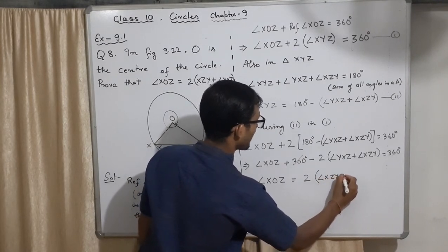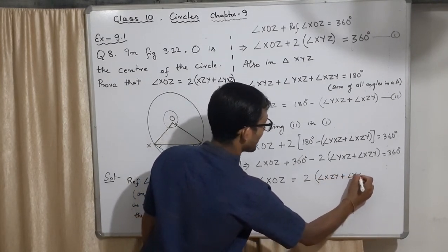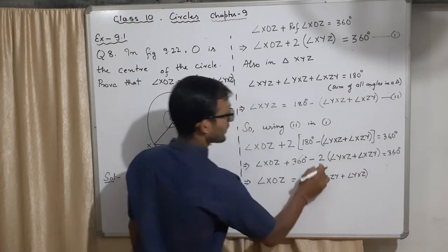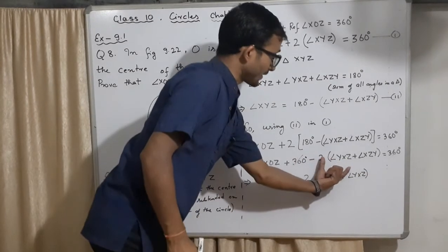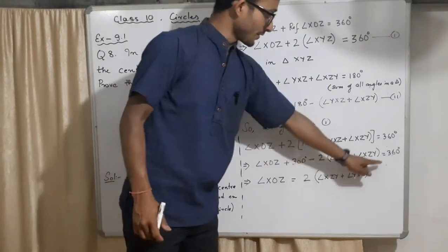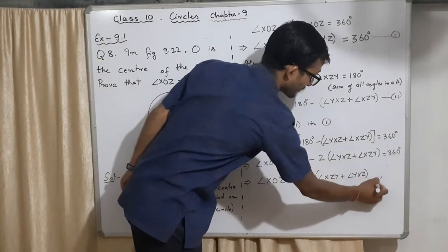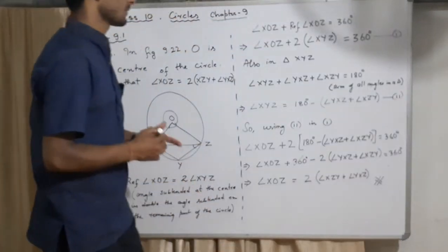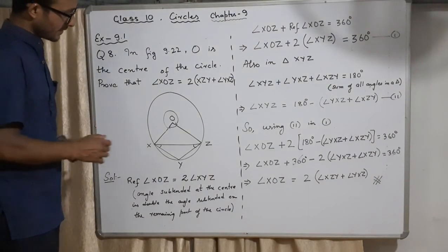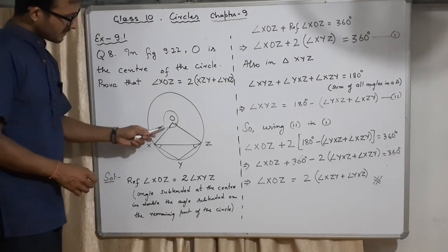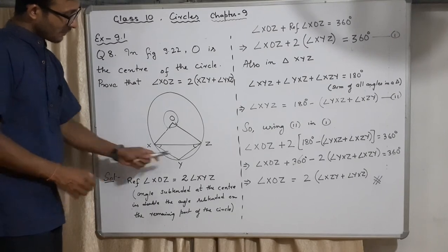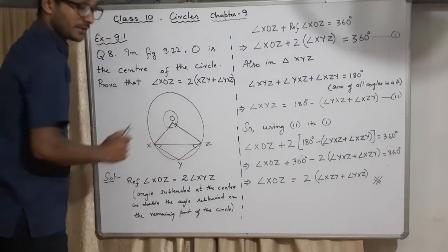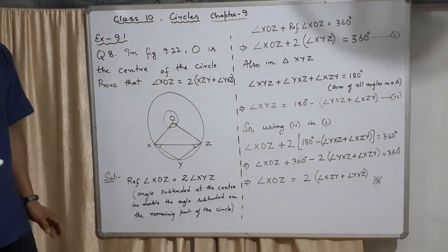∠XZY plus ∠YXZ. Only just transferring this left-hand side part to here. 360 already disappeared here. So this is what you needed here. I hope it's easy to understand. Only thing you had to know that this was going to be half of XYZ. That's all, that solved all the problem. Thank you.